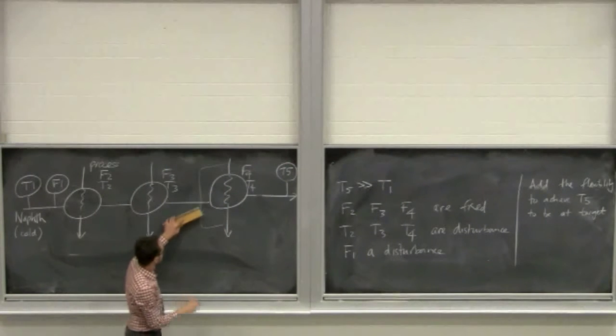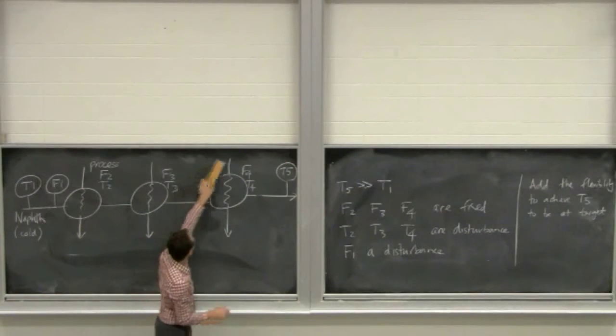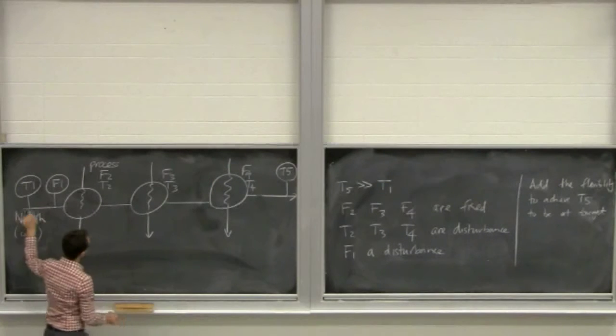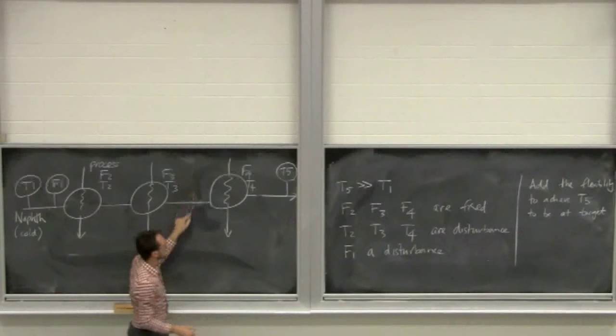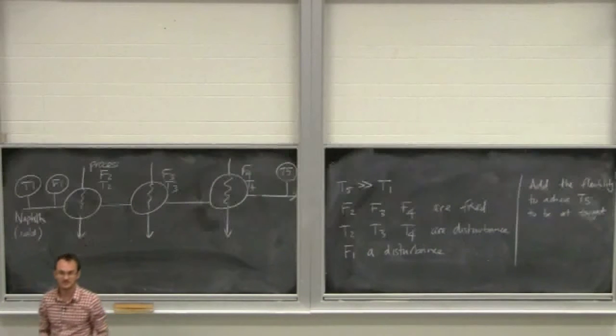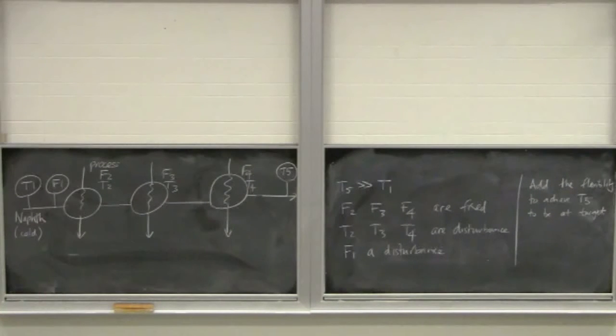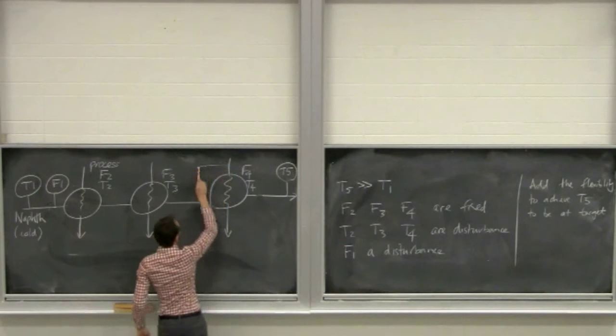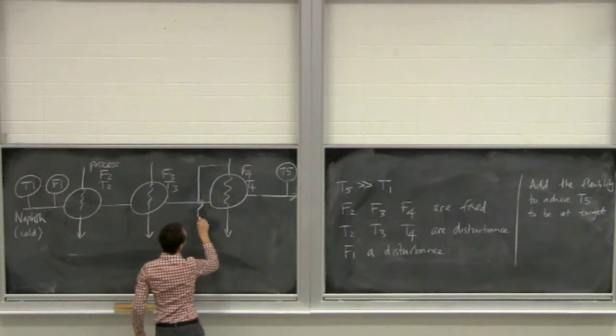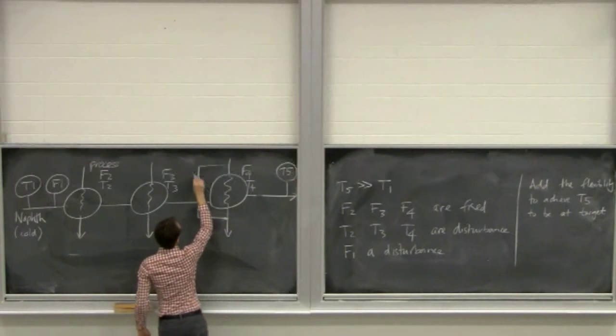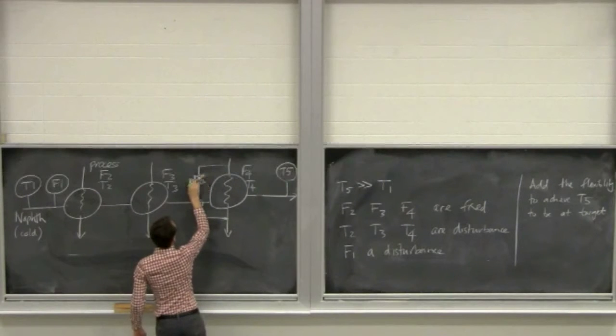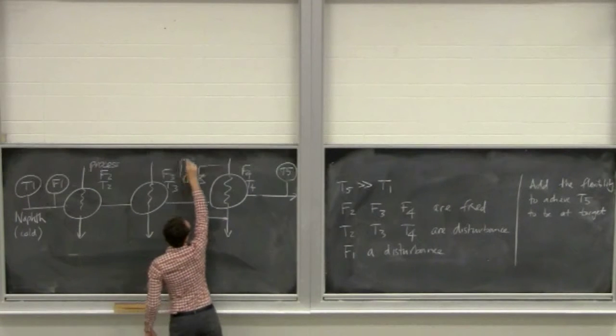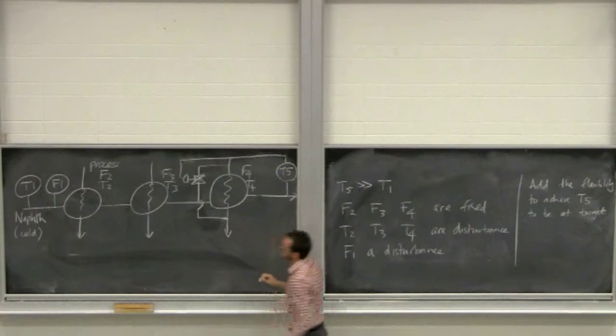One is to bypass in the product stream that we're dealing with. Or, another option is to bypass around the heat exchanger and bypass the process stream. Okay. So, let's just think about what's a potential disadvantage if we bypass in this stream. So, I'm going to put a control valve here and bring it back to T5.